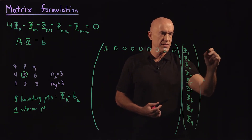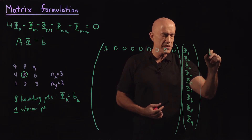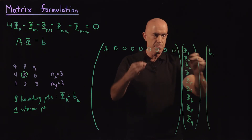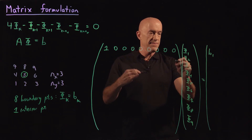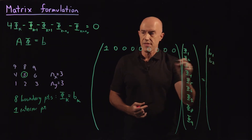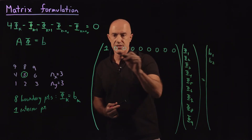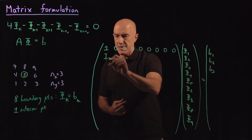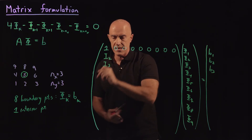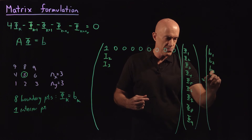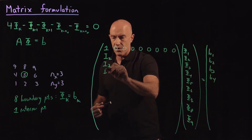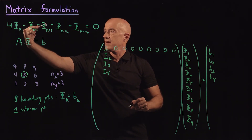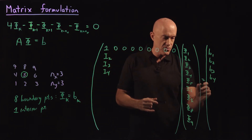And that's equal to our right-hand side. Our right-hand side is going to be the boundary conditions. So phi one equals b one — that's our boundary condition. Then phi two is supposed to be equal to b two, so that gets the second row of the identity matrix, which I'll write as i two. Phi three is supposed to be equal to b three, giving the third row of the identity matrix, i three. Phi four is equal to b four, giving the fourth row of the identity matrix. And then phi sub five is satisfied by the discrete Laplace equation, so that's equal to zero.